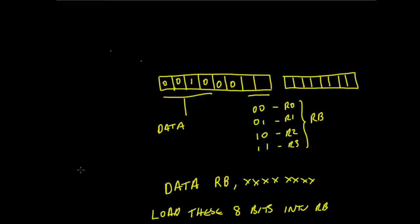In this video we're going to go over the DATA instruction. What the DATA instruction says is: load these eight bits into this register. The register is given by RB, which is the least significant two bits, so we can choose register R0 to R3 via these two bits. The DATA instruction opcode is given by 0010, and the remaining two bits are don't-care.